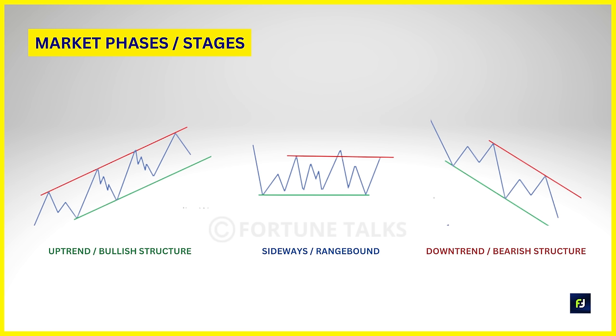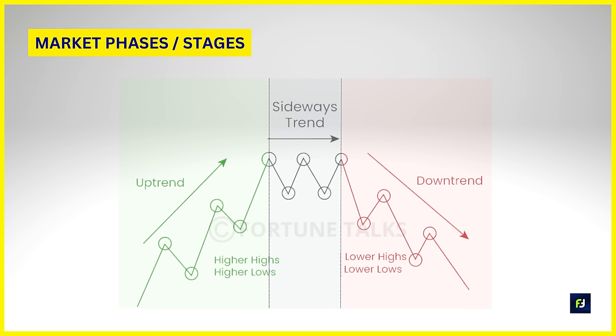Even though there are several phases of the market, the overall market structure boils down to three main stages or trends: the uptrend structure, the downtrend structure, and the sideways or range-bound market structure. As you may already have learned from the price action course, an uptrend is characterized by higher swing highs and higher swing lows, while a downtrend forms when price forms lower highs and lower lows. In a sideways market there is no clear trend.